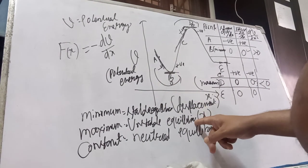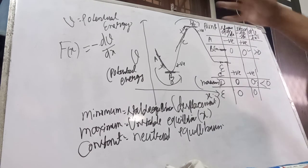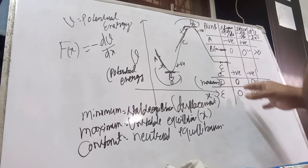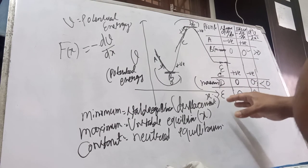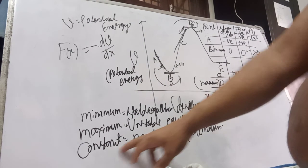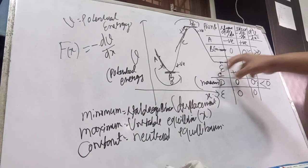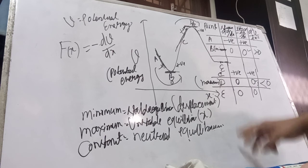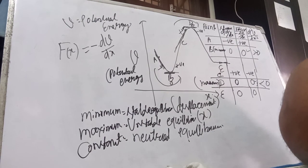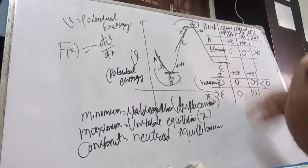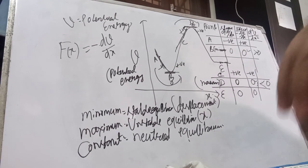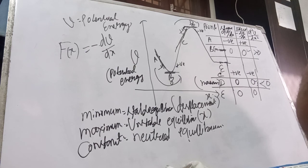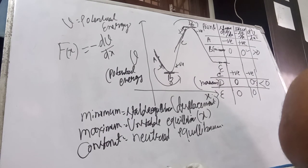Based on this graph and this theory you will be asked many questions in IIT. The constant position at point E we call neutral equilibrium. I hope I have covered all the points in this graph. Next time we will discuss further. Bye bye.